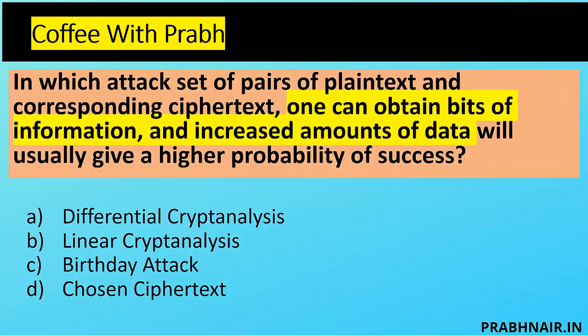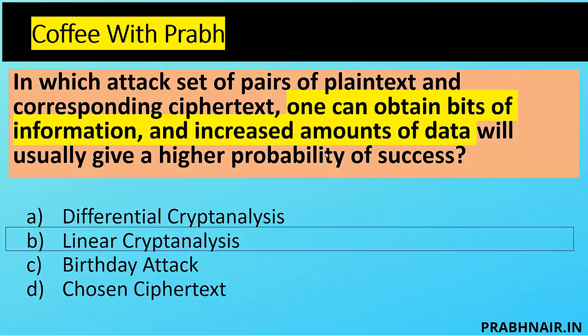In which attack does a set of pairs of plaintext and corresponding ciphertext allow one to obtain bits of information, and increasing the amount of data usually gives a higher probability of success? Differential cryptanalysis is a side channel attack, so A is removed. Birthday attack is a hash collision. In a chosen ciphertext attack, you choose ciphertext to produce plaintext — but here we already have access to both plaintext and ciphertext. Since there's no option called 'known plaintext attack,' its other name is linear cryptanalysis — so the answer is B. That's all from my side. If you find this video useful, share it, leave feedback in the comments, and let me know what video I should make next. Thank you for watching. Goodbye!